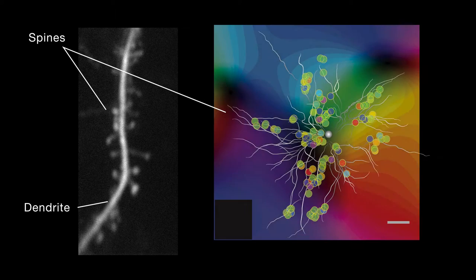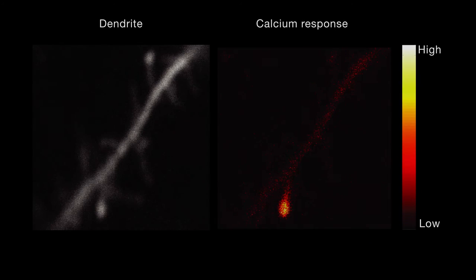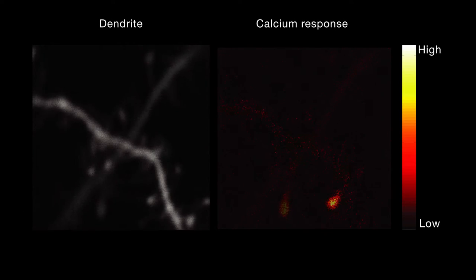Differences in orientation selectivity could simply reflect differences in the range of orientations the neuron receives information about through its spines. To test this possibility, the researchers recorded the calcium responses of many spines of many individual cortical neurons.